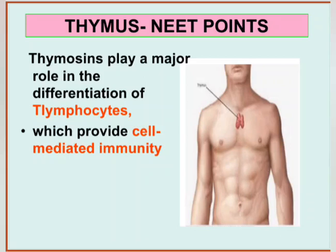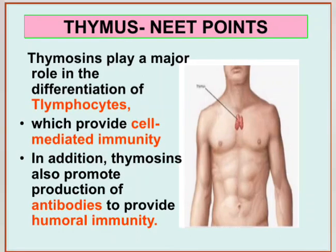T-lymphocytes provide cell-mediated immunity, while B-cells provide antibody-mediated immunity. Cell-mediated immunity means it can destroy virus-infected cells, so the thymus is responsible for prevention of virus infection. Thymosin also promotes the production of antibodies, which provide humoral immunity. Humoral immunity protects against pathogens that come via the blood — humoral means blood — and is especially effective against bacterial infection.